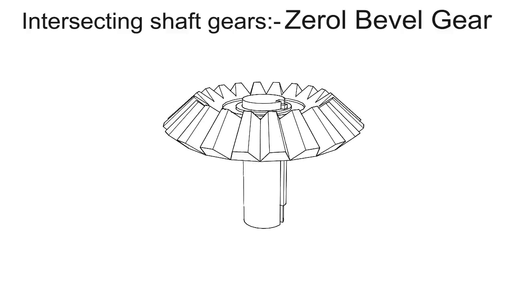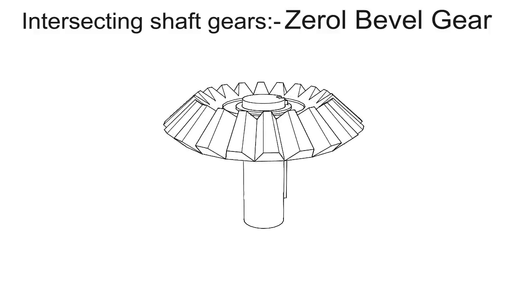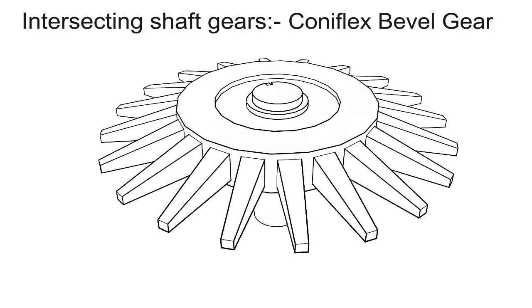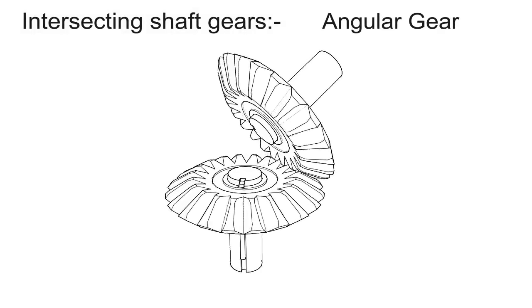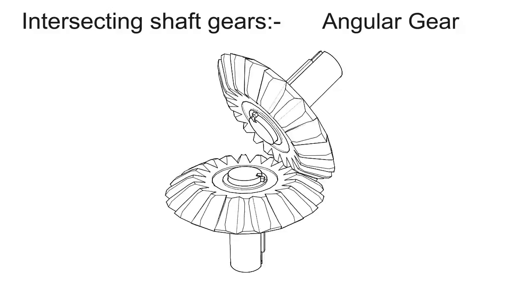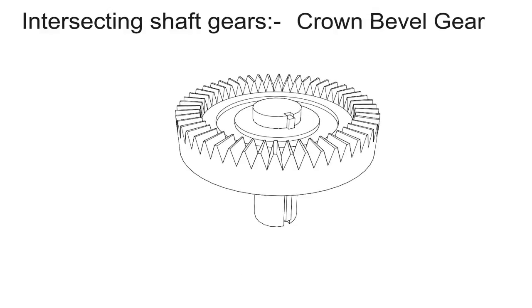Zerol bevel gear — spiral bevel gears with curved teeth but with a zero degree spiral angle are known as zerol bevel gears. Coniflex bevel gear — it is a modified form of straight bevel gear and has teeth in the shape of cutting blades. Angular gears — angular gears whose shafts are set at an angle other than 90 degrees are useful when the direction of shaft rotation needs to be changed. Crown bevel gear — a gear having teeth that project at right angles to the face of the wheel is called a crown bevel gear.